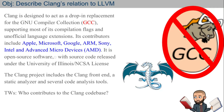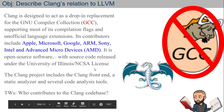Clang's contributors include Apple, Microsoft, Google, ARM, Sony, Intel, and AMD. It is open source software released under the University of Illinois license. The Clang project includes a Clang front end, a static analyzer, and several code analysis tools.